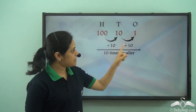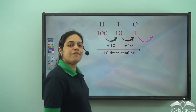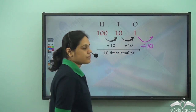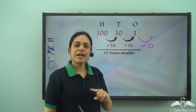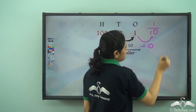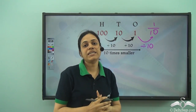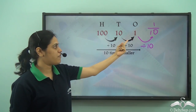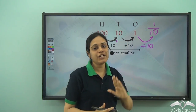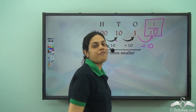Now what happens if I move further to the right — that is, if I move to the right of the ones place? Once again, if I divide by ten, one divided by ten is one-tenth. So if I move further to the right, I get the one-tenths place. So we have the ones place, tens place, and hundreds place, but if I move to the right of the ones place, I get the one-tenths place.